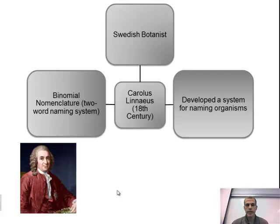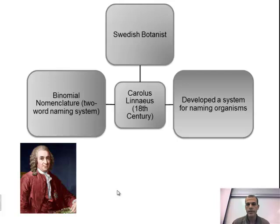This naming system was developed by Carlos Linnaeus back in the 18th century. He was a Swedish botanist — a botanist is someone who studies plants. He developed a system for naming organisms called binomial nomenclature — a two-word system: "bi" meaning two, "nominal" for name, and "nomenclature" for the naming system. So we're always going to use two words when we name every particular organism. From his initial development, the system has been extended to look not just at what an organism looks like, but also into its DNA and evolutionary patterns.